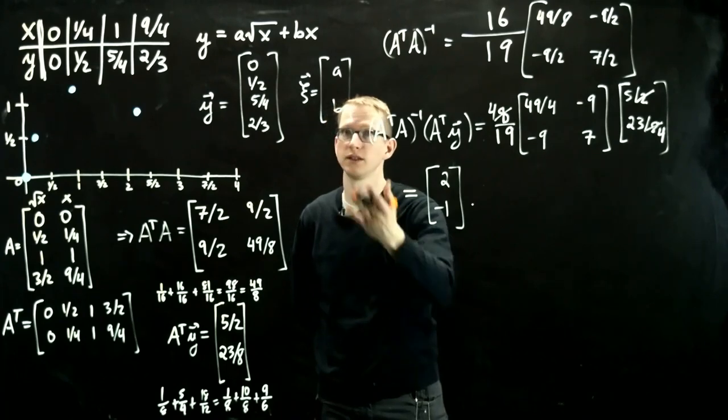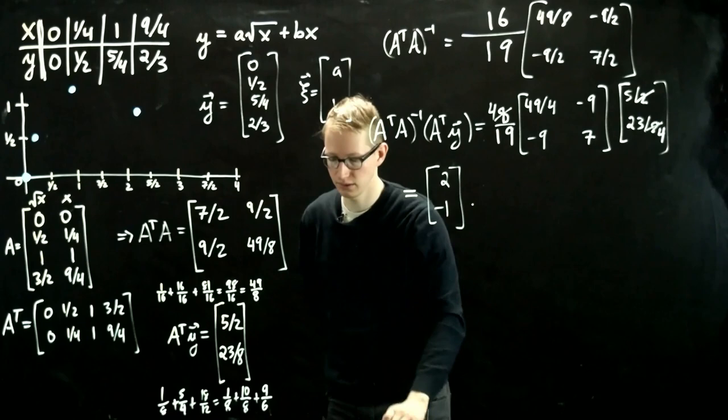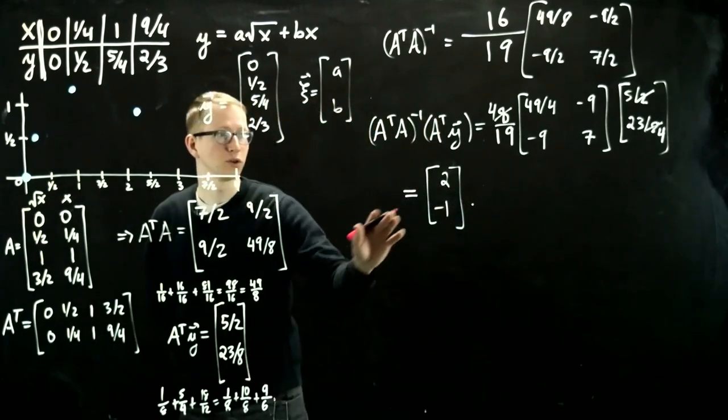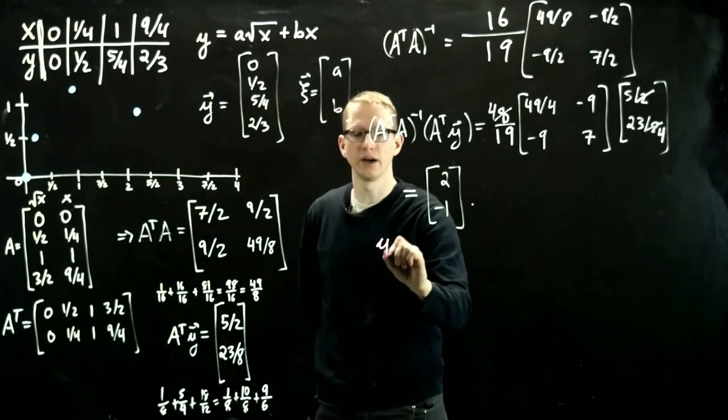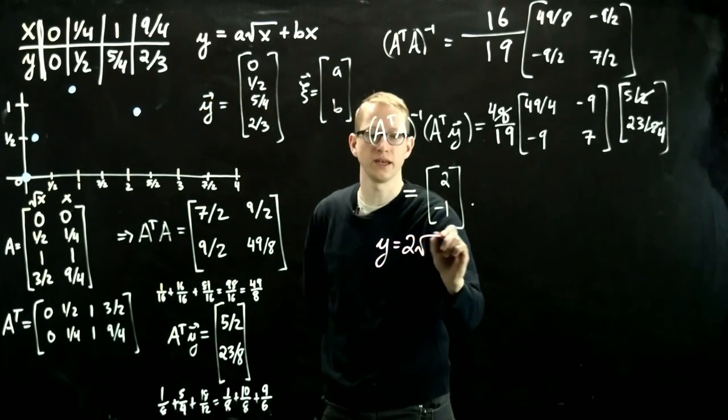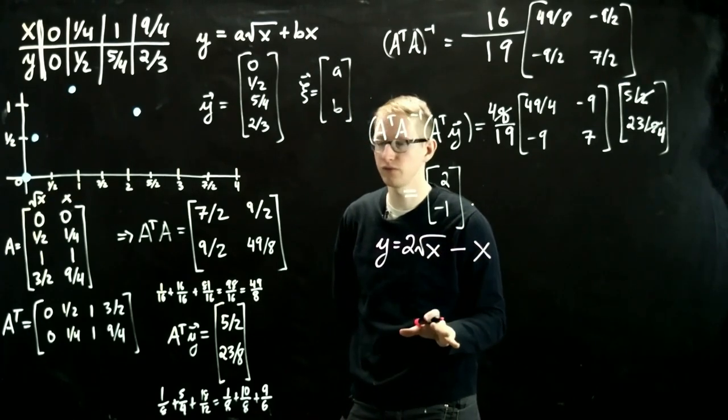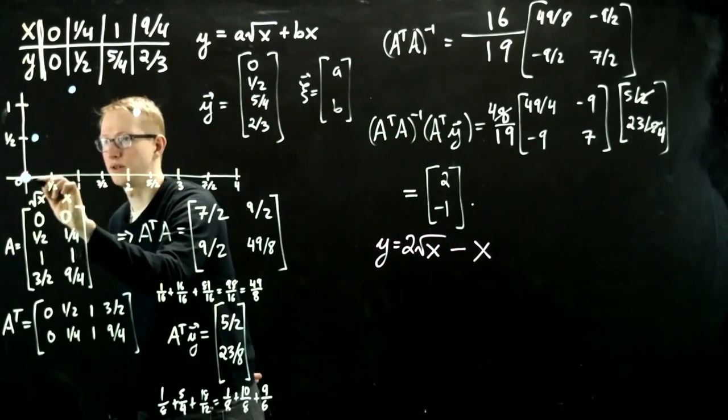So this tells us that the coefficients a and b are 2 and minus 1 half. Let's just see if this is a reasonable answer. So if we take this function and we try to plot it, so therefore y equals 2 square root of x minus x. Let's plug in a few values to see what we get. When we plug in 0, we get 0. So we're here.